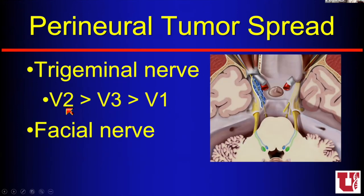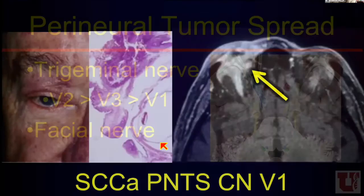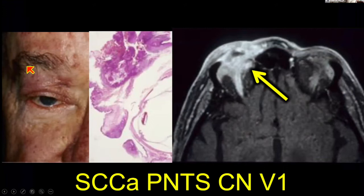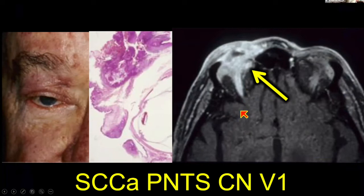With perineural tumor spread, we seem to see it most on V2, more than V3, more than V1, and then the facial nerve is most likely in my practice. I want to be very familiar with those nerves. If somebody has a little squamous cell carcinoma on the skin of the eyebrow, I remember where V1 comes out over the eyeball, and I'm going to look very closely to see if there's abnormal enhancement along that course — that might be perineural tumor spread.